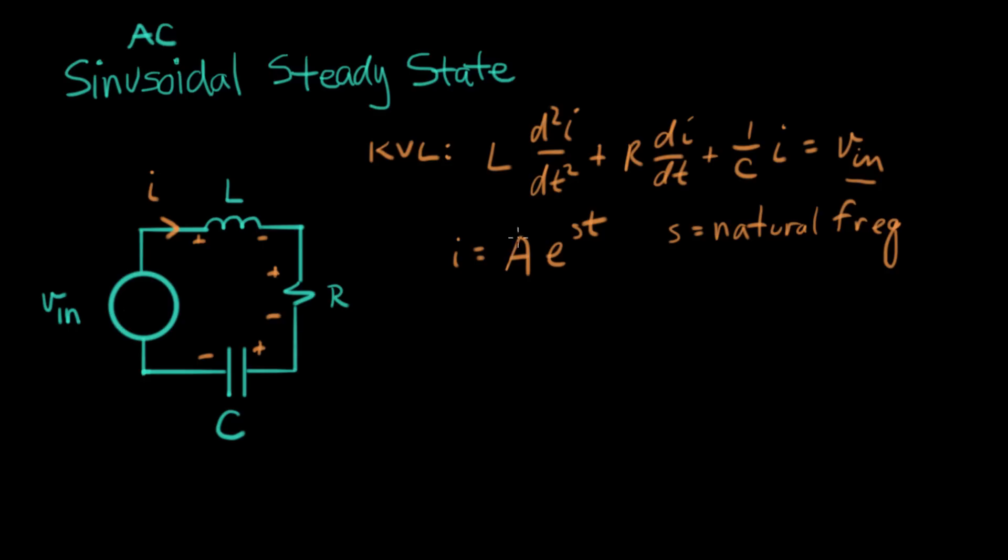To verify if I is a solution, we plug it into this equation. After factoring out I, we get (Ls² + Rs + 1/C). For the natural response, we solve by setting this term equal to zero and solving for S to find the natural frequency. Then we determine A by looking at initial conditions—whatever initial energy was in the circuit determines A's value.